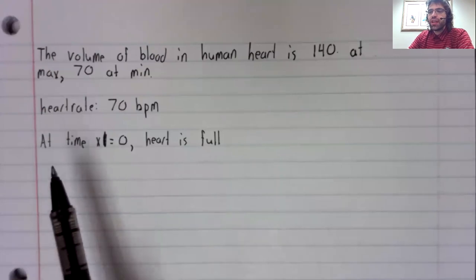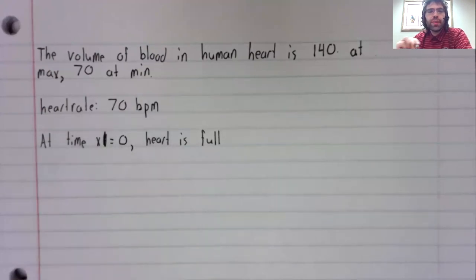I'm giving an additional piece of information that at time zero, the heart has 140 milliliters of blood in it. Let's find a sinusoidal function that models this. There are two options.